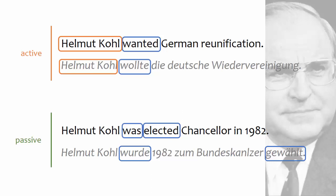In sentences in the passive, the subject is the goal — the person upon whom the action is performed, or the thing upon which the action is performed. In the sentence at the bottom of your screen, you start with the verb and ask who was elected. The answer is Helmut Kohl, making him the subject.